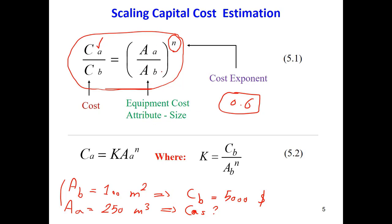In the next slide you will see that 'a' is called the equipment cost attribute — that's why it is shown with A. C is cost. This A can sometimes be the size; for example, for a heat exchanger it can be the surface area. For a pump it can be the power; for a fired heater it can be the heat duty or the amount of fuel. It can be any parameter — not necessarily area. Equipment cost attribute can be capacity, flow rate, power, area, and so on.